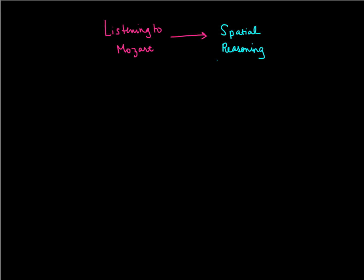We're going to use that particular example to talk about those three things: how do we explain that relationship, under what conditions does that relationship work or do different conditions change that relationship, and is this relationship real? Or does listening to Mozart and spatial reasoning just relate to some type of third variable that makes it look like there's a relationship when there really isn't?